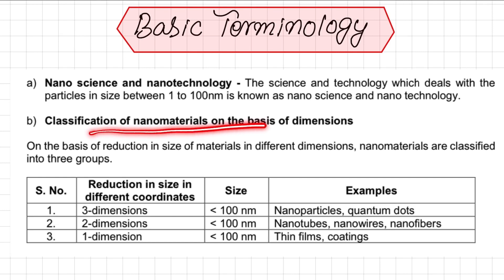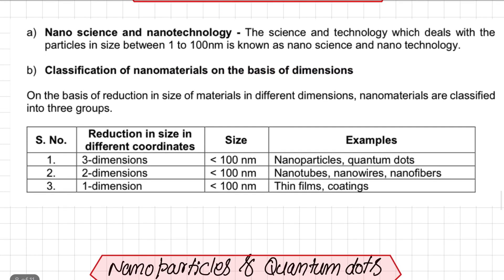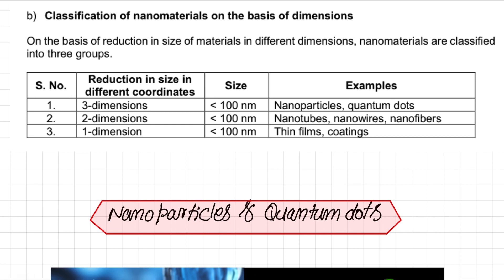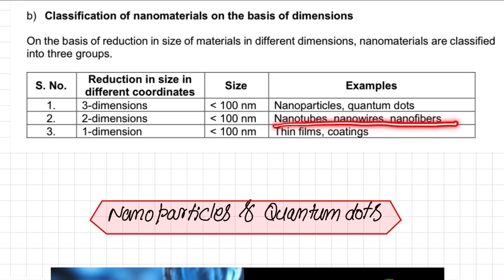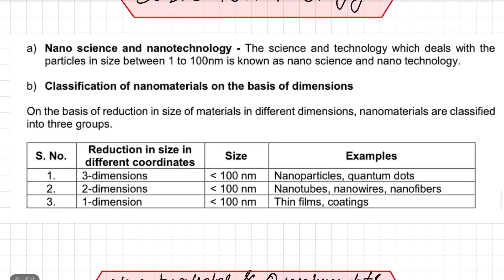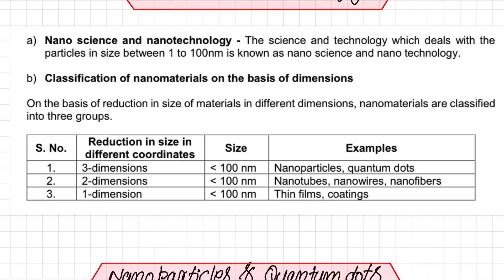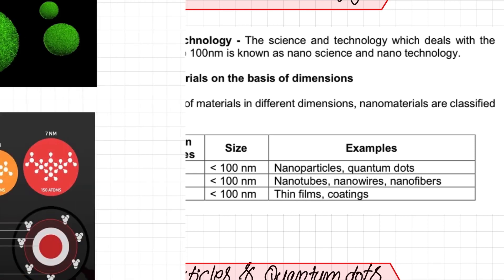Nanomaterials have been further classified on the basis of their nanometer dimensions. Based on reduction in size and dimensions, nanomaterials are classified into three main groups: three-dimensional, two-dimensional, and one-dimensional — all less than 100 nanometers in size. Three-dimensional things in the nanometer range are called nanoparticles and quantum dots. Two-dimensional things are called nanotubes, nanowires, and nanofibers. One-dimensional things are called nanofilms and coatings.